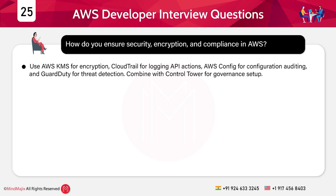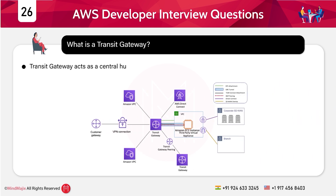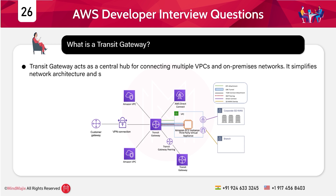Next category in the advanced level: general or most frequently asked interview questions. Question 26: What is Transit Gateway? Answer: Transit Gateway acts as a central hub connecting multiple VPCs and on-premise networks. It simplifies network architecture and supports scalable routing policies across accounts and regions.